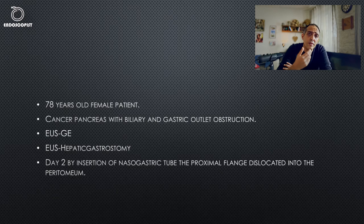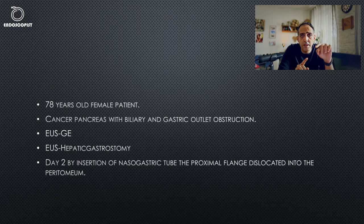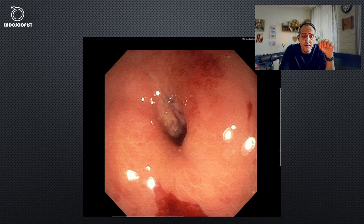We believe the nasogastric tube put pressure on the hepatic gastrostomy metal stent, leading to its dislocation into the peritoneum — meaning part of the stent remained in the liver while the proximal part was in the peritoneum. This caused leakage of bile into the peritoneal cavity, or biliary ascites. When I performed upper endoscopy, it looked like this: I found the very tight opening we had made for the hepatic gastrostomy.